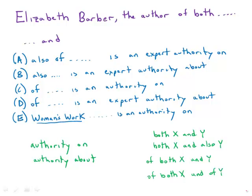This problem about the author Elizabeth Barber explores a couple different idioms that we'll discuss here. First of all, the word authority should be followed by what preposition? Authority on or authority about?